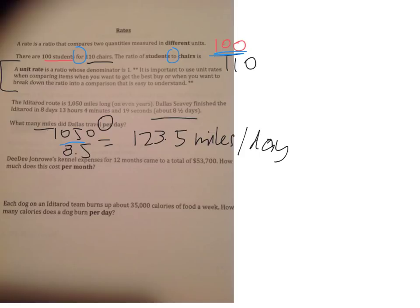Let's look at the other example. DeeDee John Rowe's kennel expenses for 12 months came to a total of $53,700. How much did this cost per month? So we want to know the month.